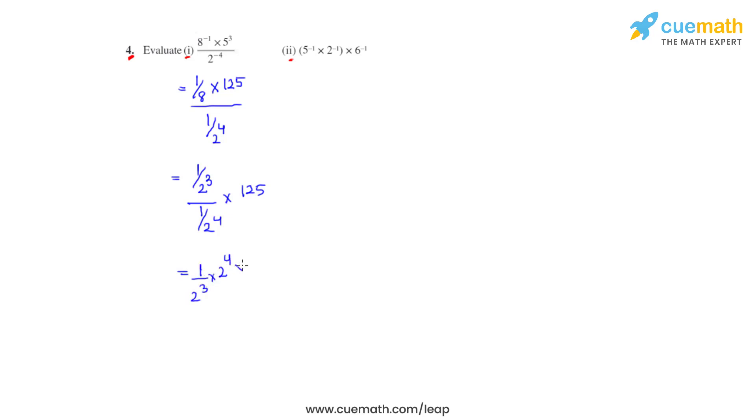So we get that as 1 over 2 raised to 3 times 2 raised to 4 times 125. The bases are the same and they are in division. For 2 raised to 4 and 2 raised to 3, the powers will get subtracted, so we get 2 raised to 4 minus 3, which is 1. So we get 2 times 125, and the answer for the first bit is 250.